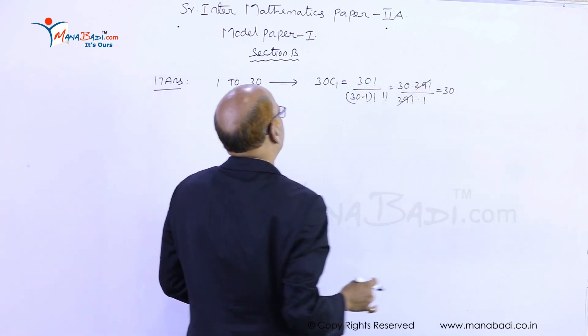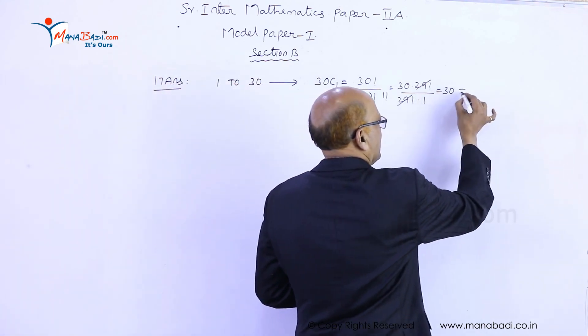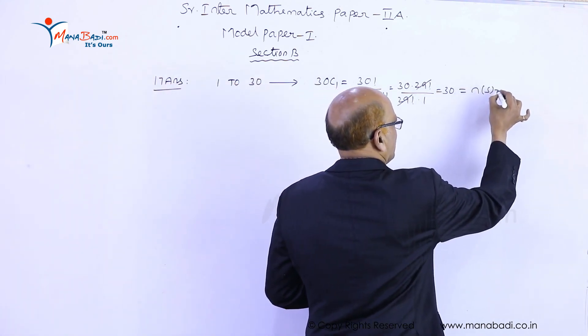Which equals 30, so that is n(S). Out of the 30 tickets we are selecting one, that will be 30.